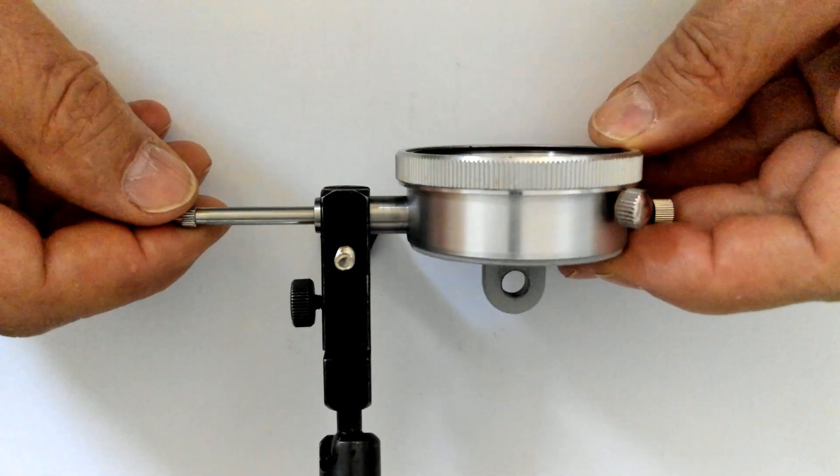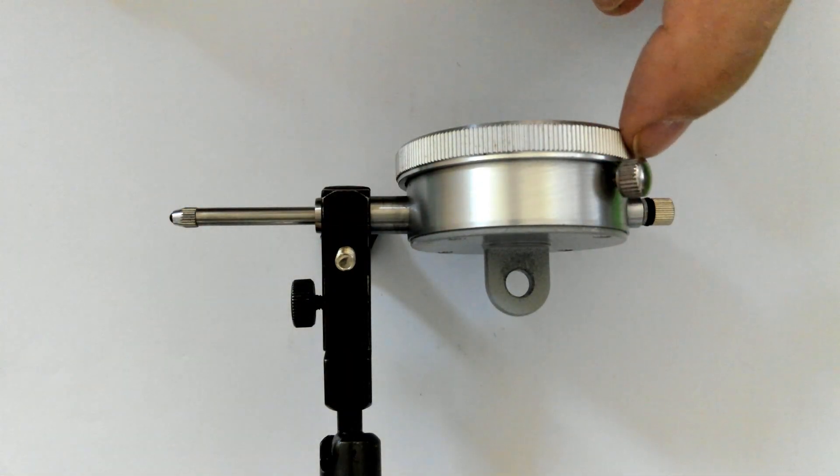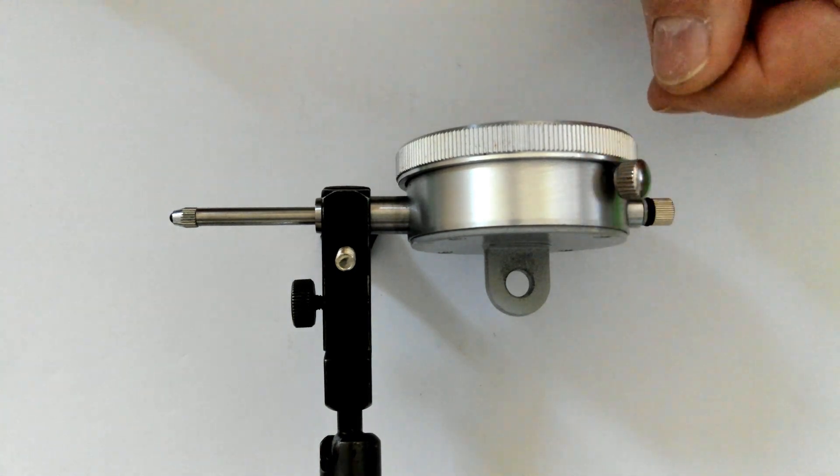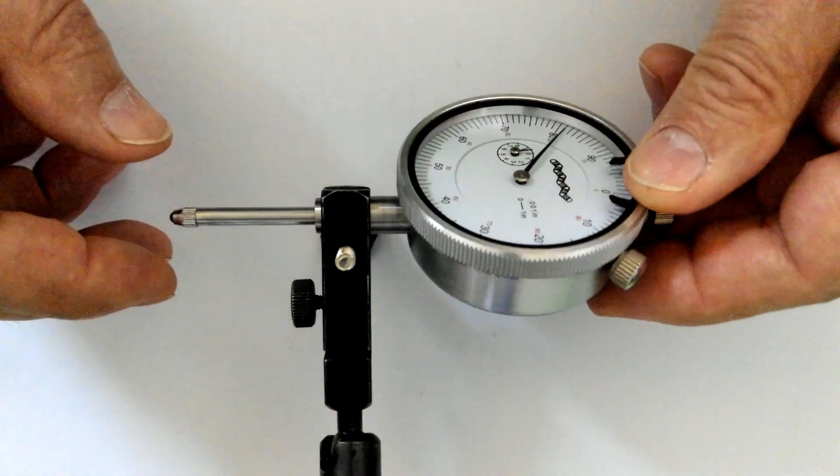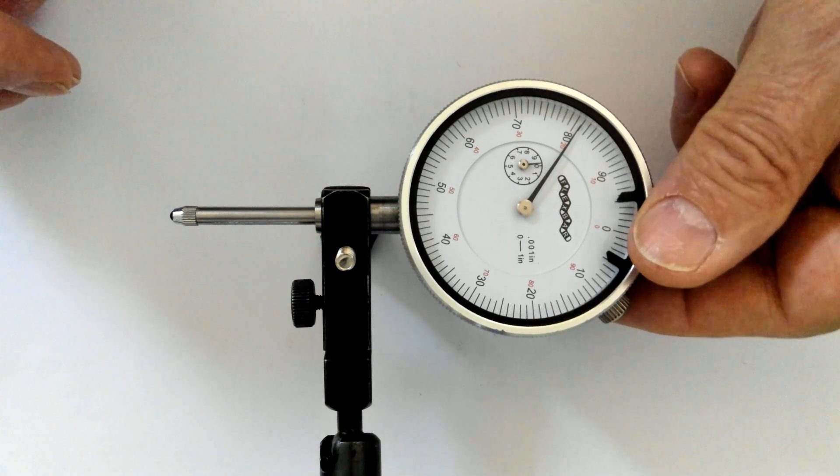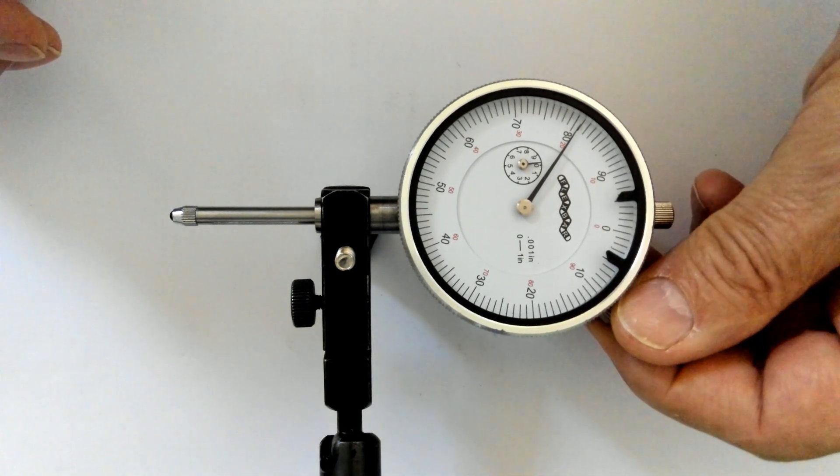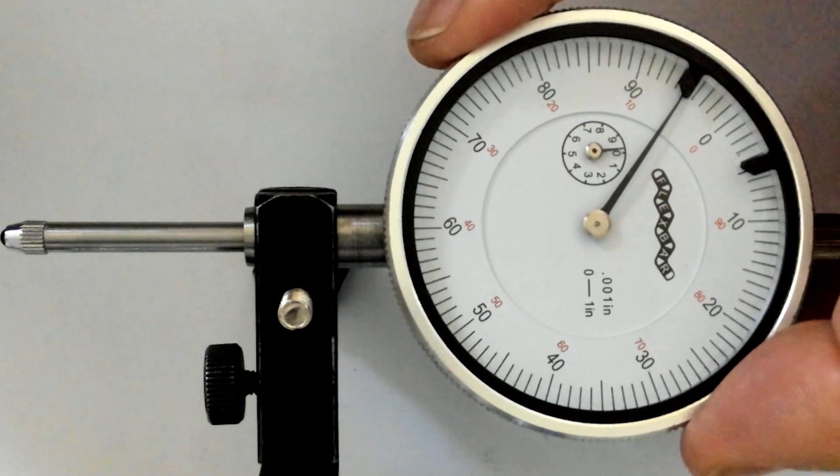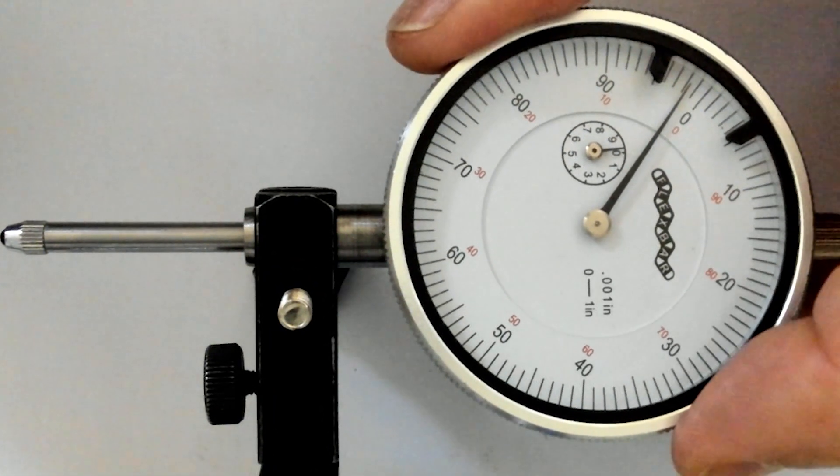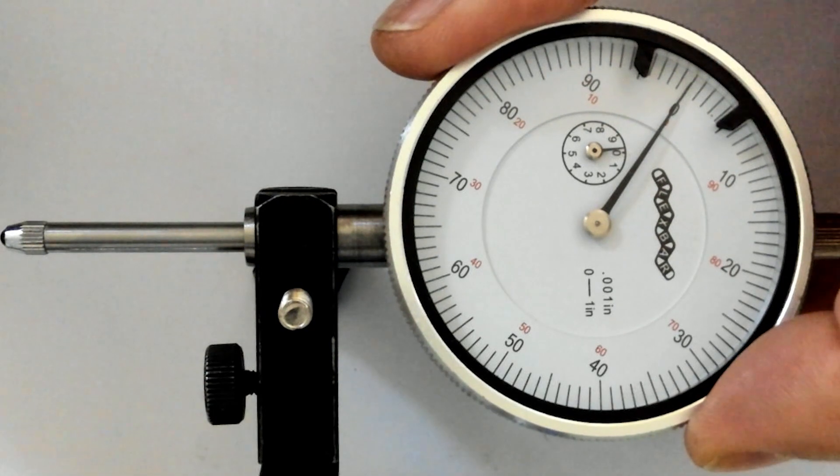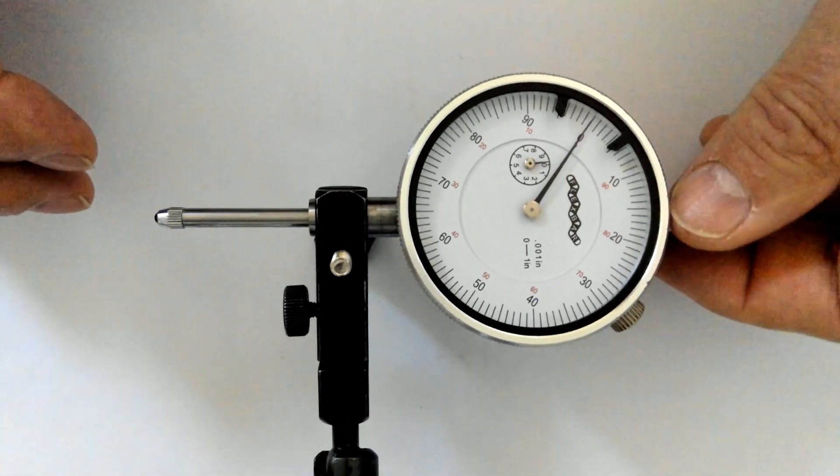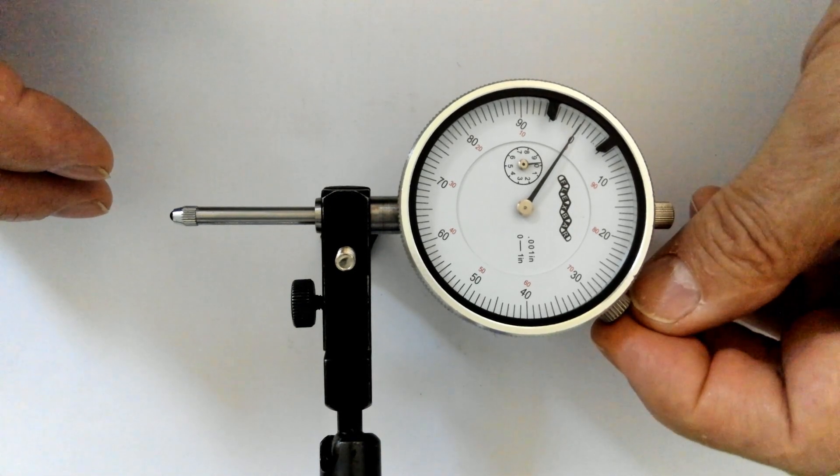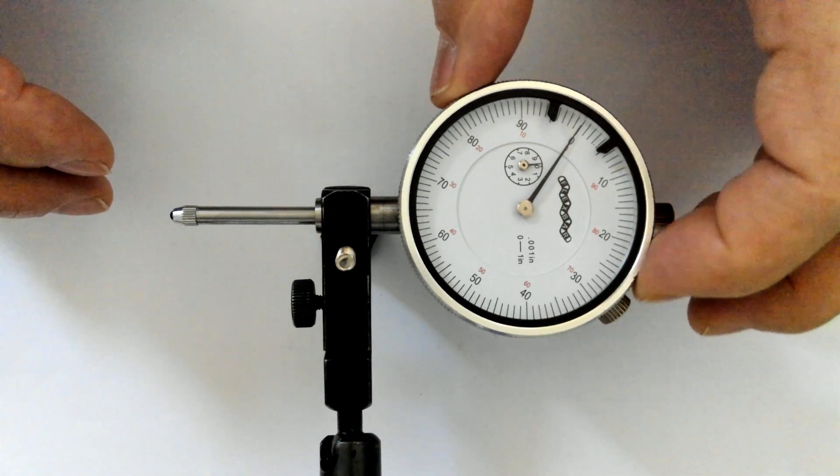The bezel and scale lock screw allows the user to zero the large pointer. Loosen the lock screw, turn the bezel and scale to align the large pointer, tighten the lock screw. Check that the bezel doesn't move and the dial is properly aligned.